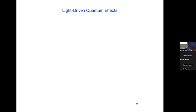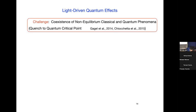Now what happens when we include quantum effects? The challenge is the coexistence of non-equilibrium classical and quantum fluctuations. There was earlier work by Peter Orth and collaborators, and also Aditi Mitra, on quenches directly to the quantum critical point — we studied those carefully, but we must look at situations where classical and quantum fluctuations coexist.